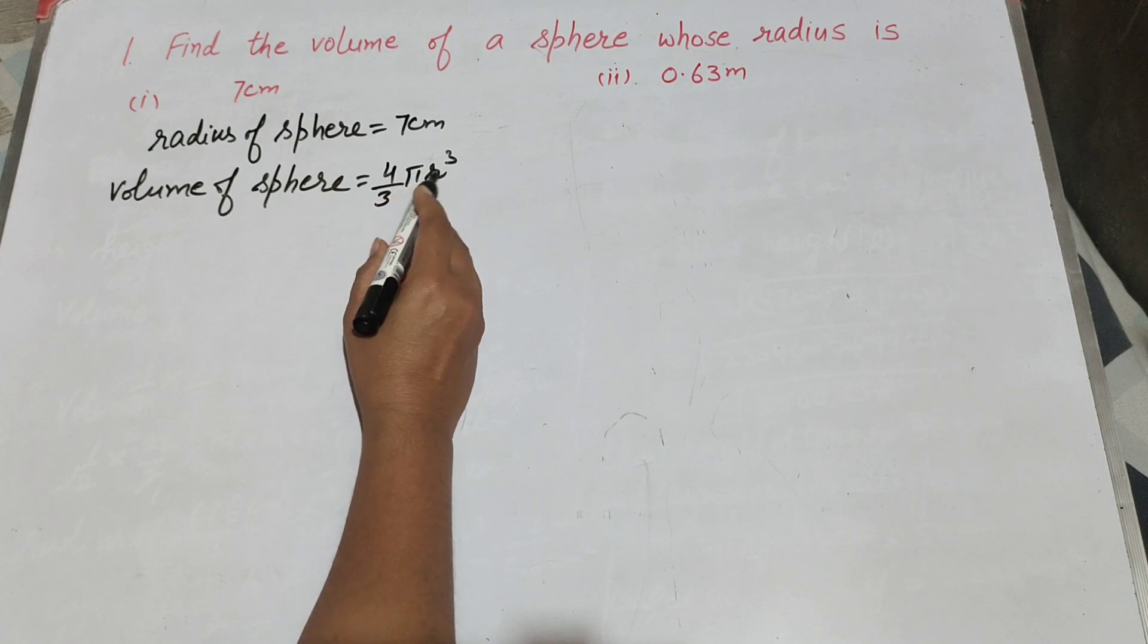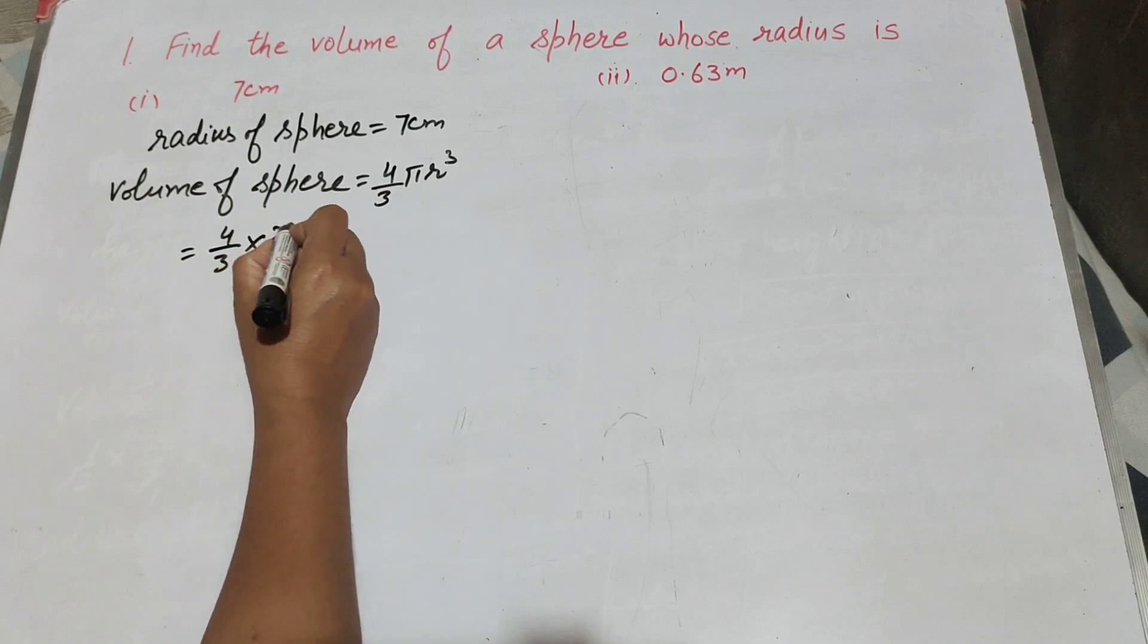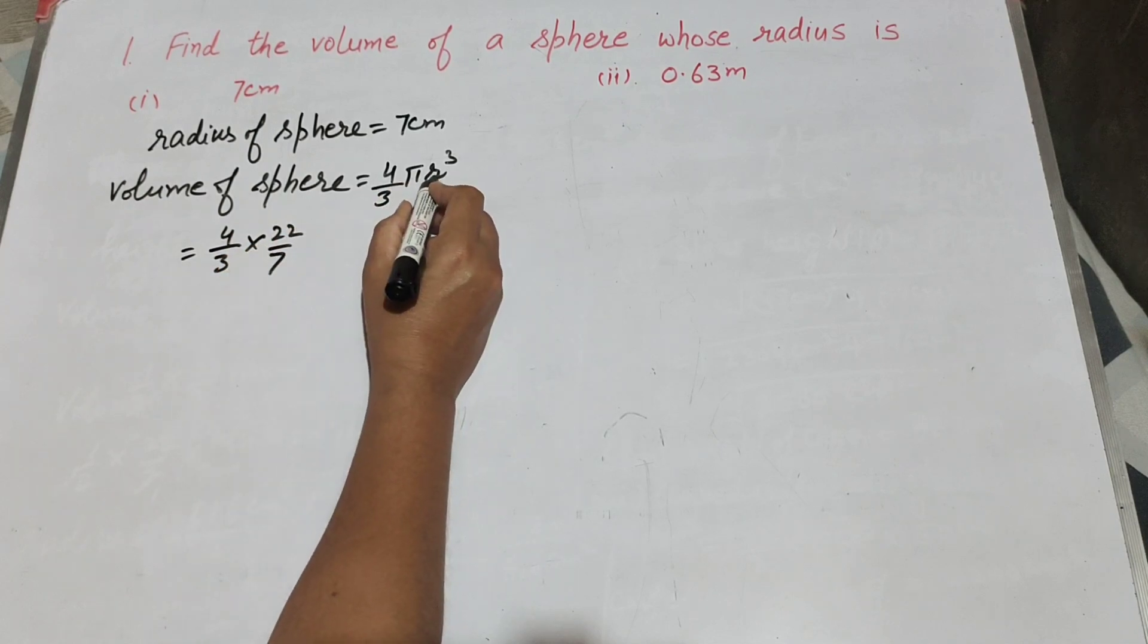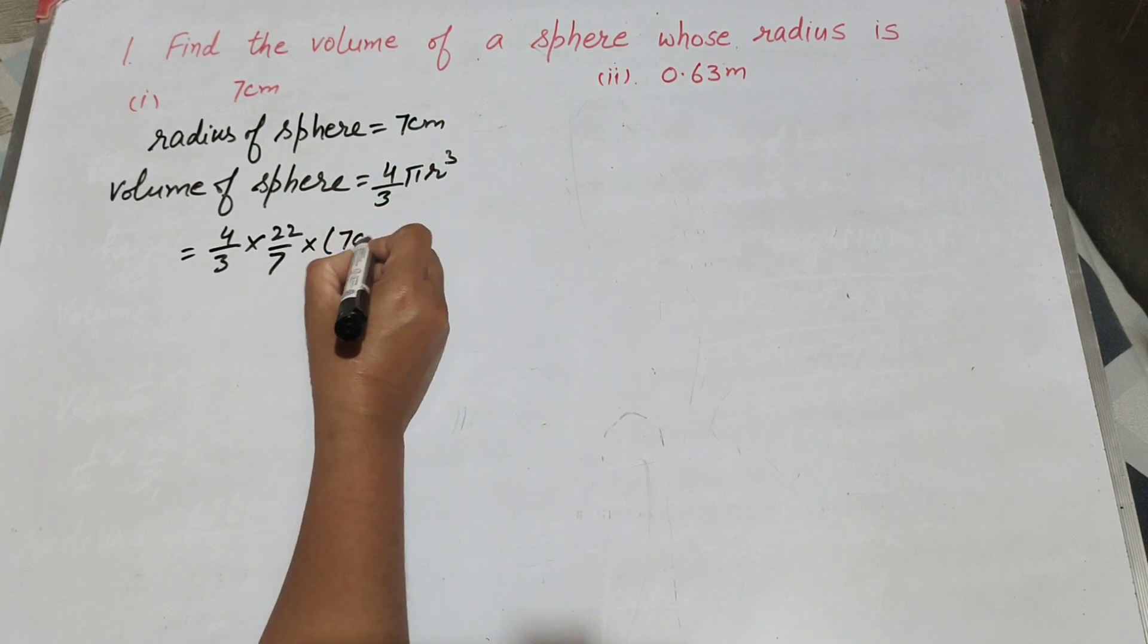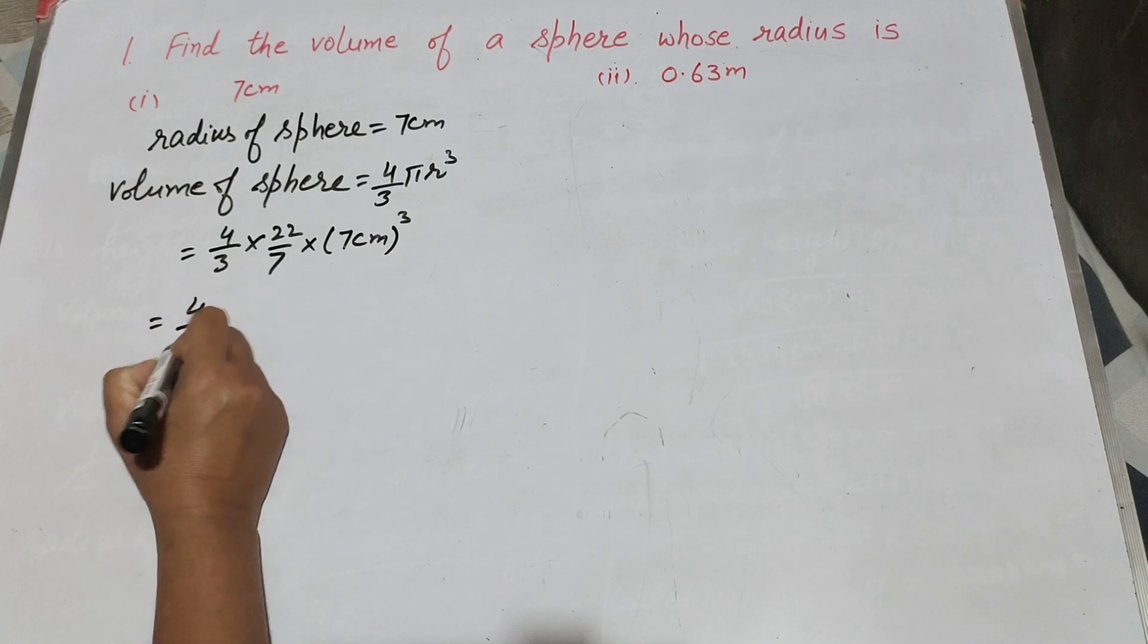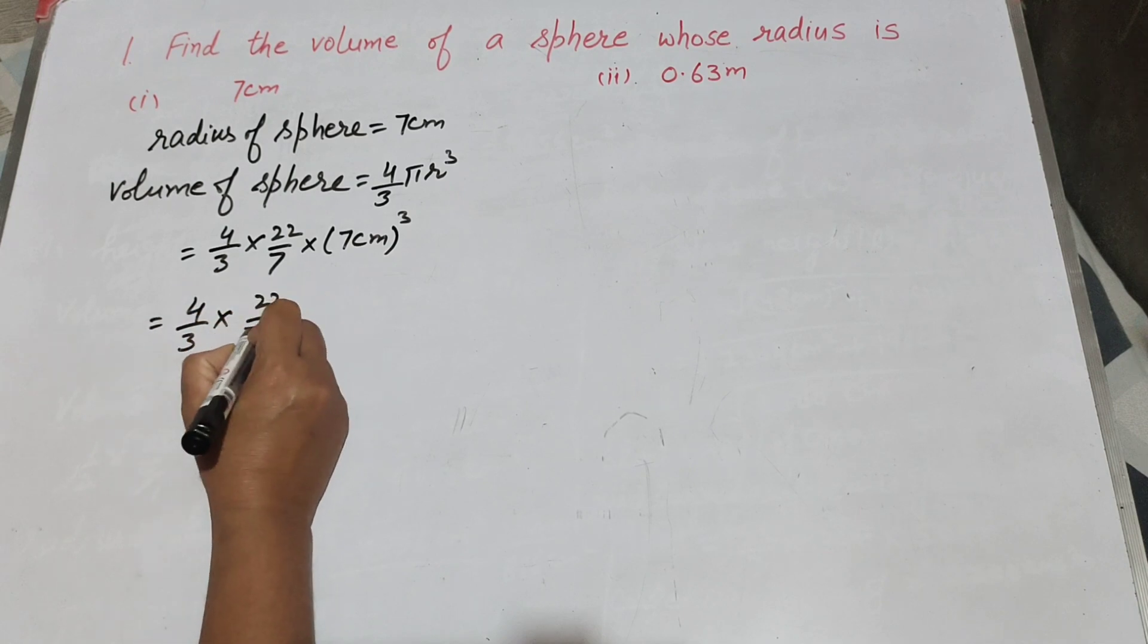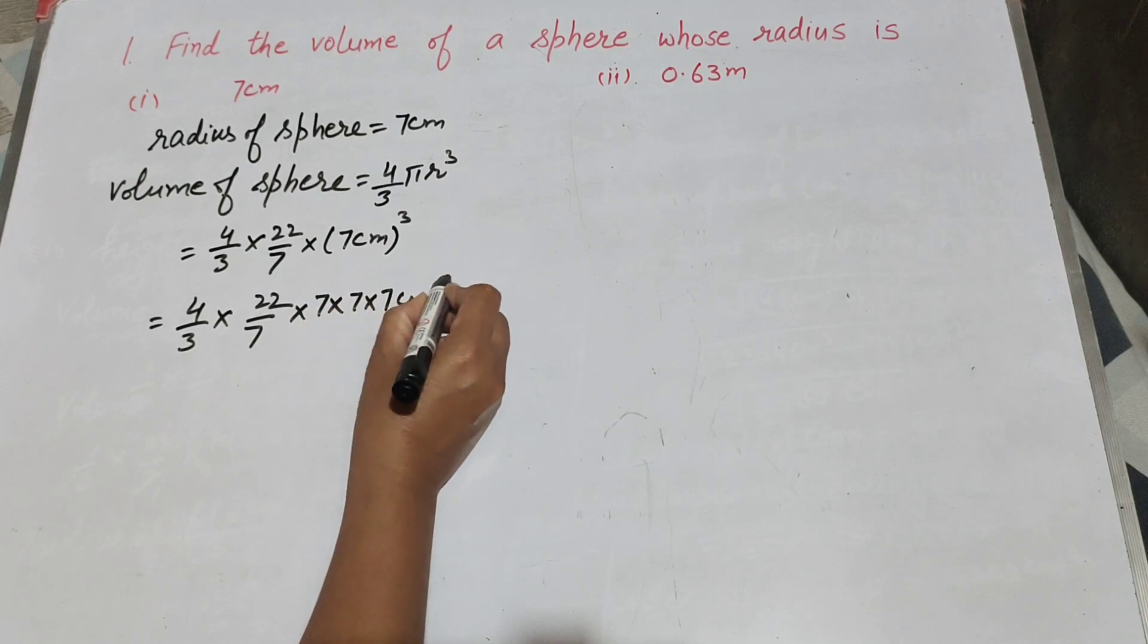This is the formula that we use to find the volume of sphere. So 4 over 3 pi, its value is 22 over 7, and r is radius, that is 7 cm. So 7 cm cube. It is equal to 4 over 3 times 22 over 7 times 7 times 7 times 7 cm cube.